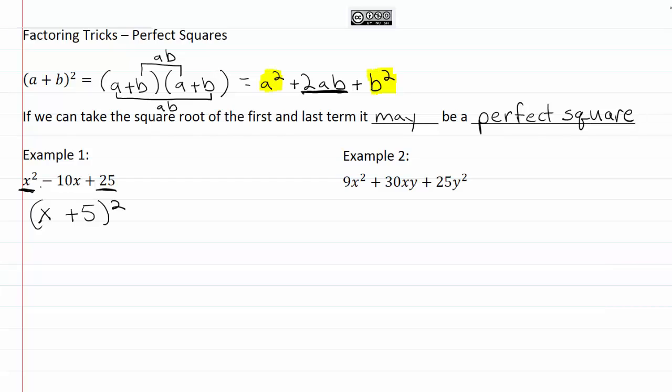But we want to check and see whether or not it's following this pattern. So we want to see whether or not we're going to get this 2ab in the middle. So we would take 2 times a is our first term times b is our second term and we would get 10x.